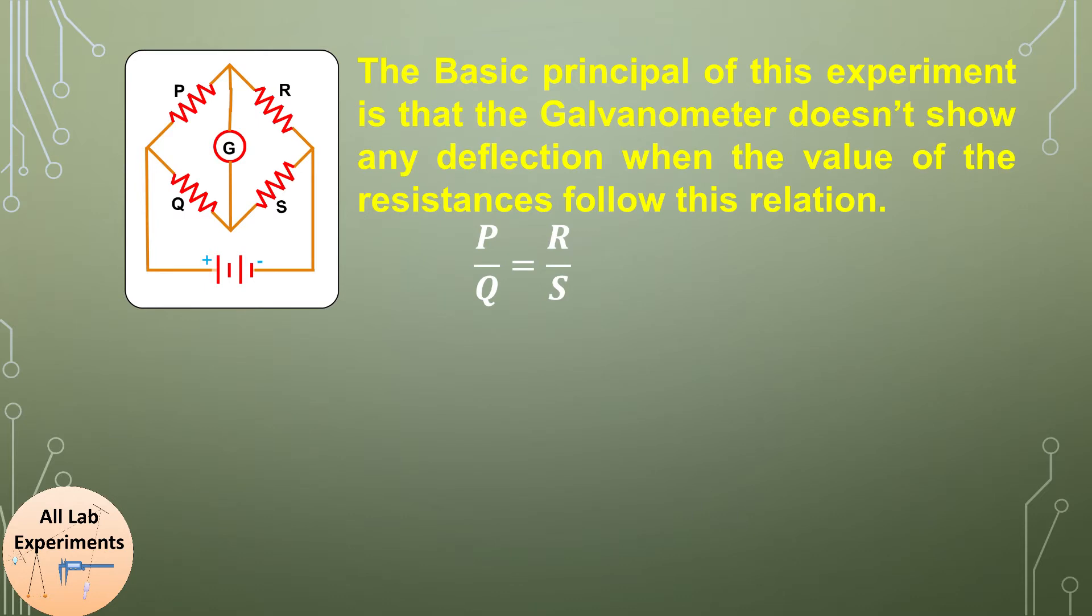P divided by Q is equal to R divided by S. At this point it is called that the bridge is balanced and galvanometer doesn't show any reading.